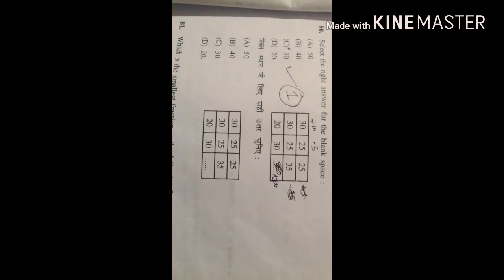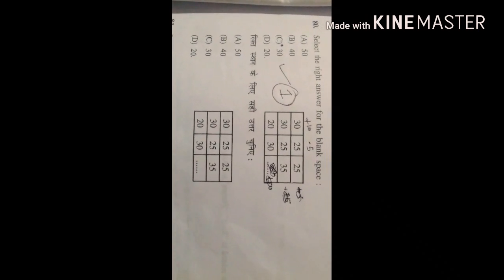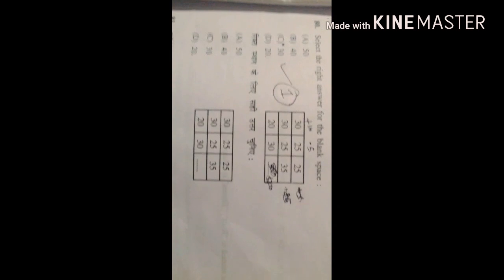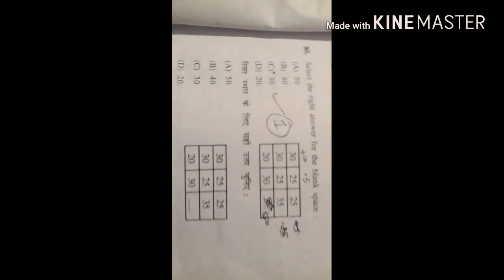And the next question is 80. Select the right answer for the blank space. So option number C is correct. I am not sure but I think it is the best option to choose.